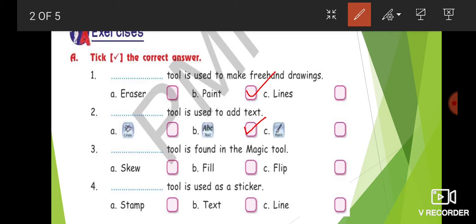Third question: a blank tool is found in the magic tool. Among the options — skew, fill, flip — which tool is found in the magic tool? The answer is fill. The fill tool is found in the magic tool.